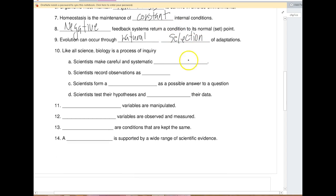Scientists make careful and systematic. Scientists record observations, scientists form a hypothesis, scientists test their hypothesis, and blank variables are manipulated.